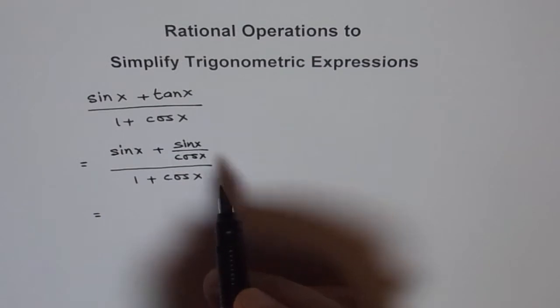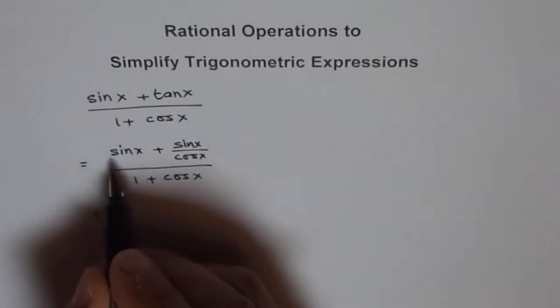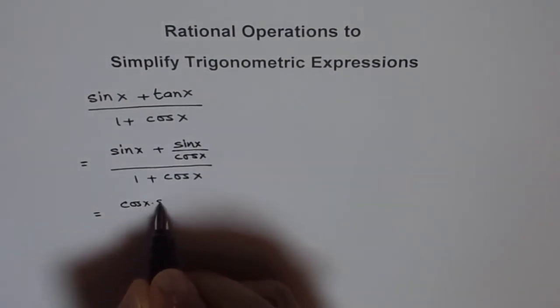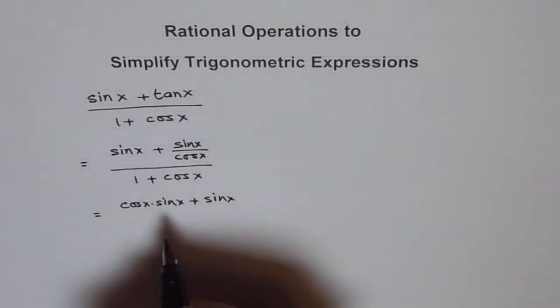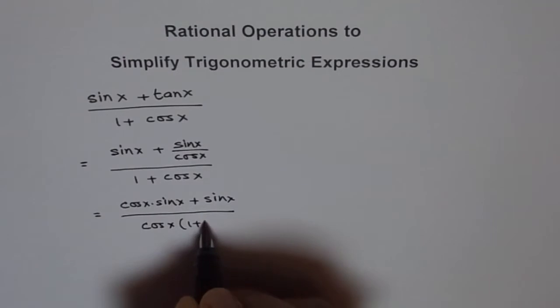If you multiply both numerator and denominator by cos x, what do you get? You get cos x sin x plus sin x, because the cos x gets cancelled out, over cos x times 1 plus cos x.